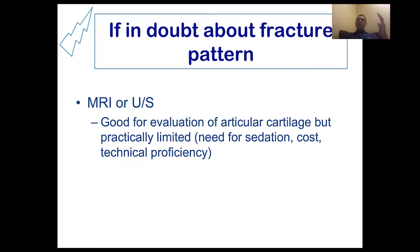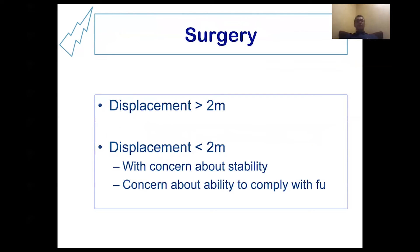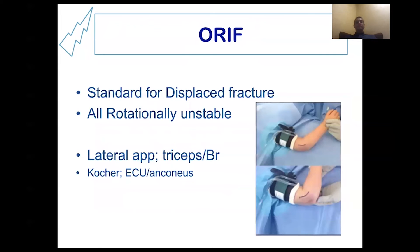We can diagnose the undisplaced fracture that extends to the articular surface by MRI, but sometimes it is difficult to be diagnosed with ultrasonography. Surgery is indicated once we have displacement more than two millimeters, and in cases of less than two millimeters where there is concern about stability or extension to the articular surface, or concern about the ability of the parents to comply with weekly follow-up and x-ray. Open reduction internal fixation is the standard for displaced fracture or any rotationally unstable fracture.